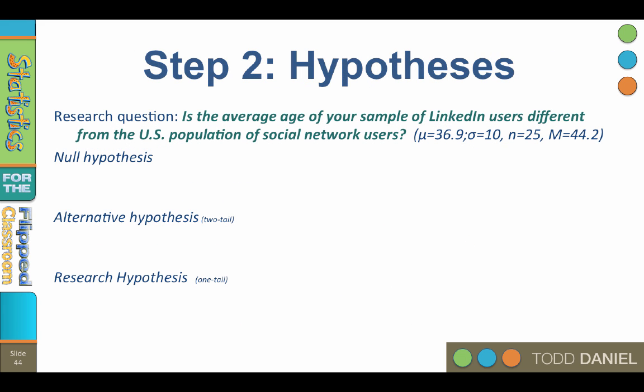Step two: state the null and alternative hypothesis. We're doing a two-tailed test, so we'll start with the null hypothesis. In words: the sample of LinkedIn users is no different than the population of average users. In symbols: H-sub-zero colon mu equals 36.9 — in other words, the sample is drawn from a population with a mean of 36.9.